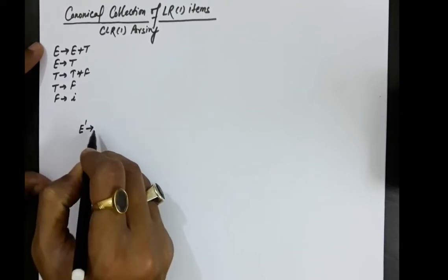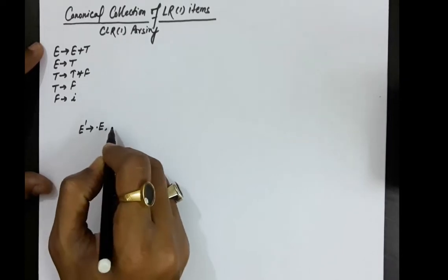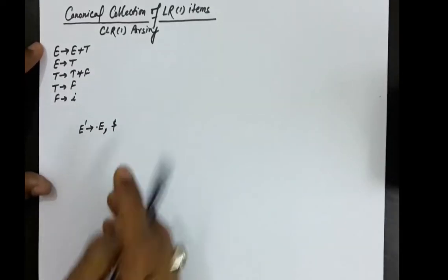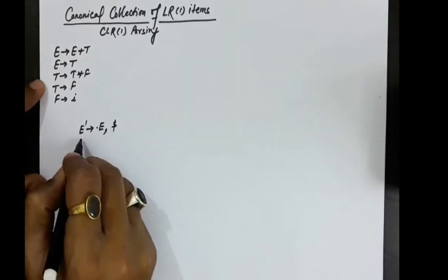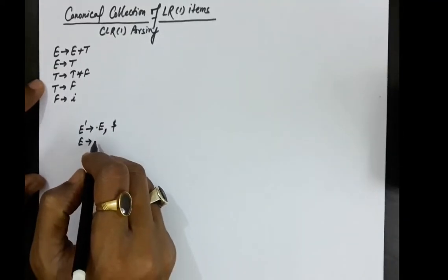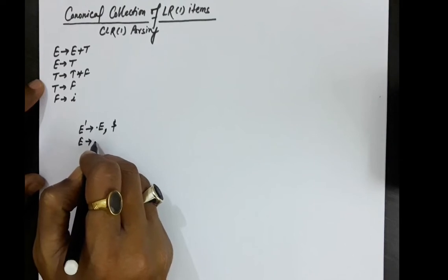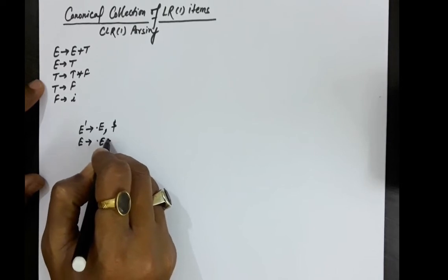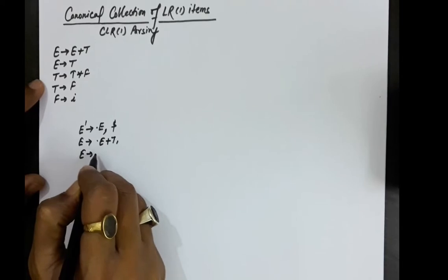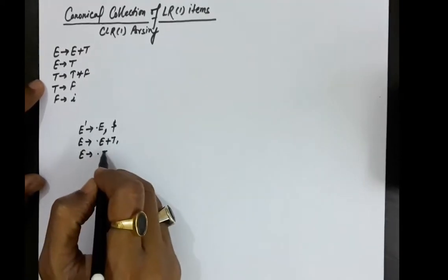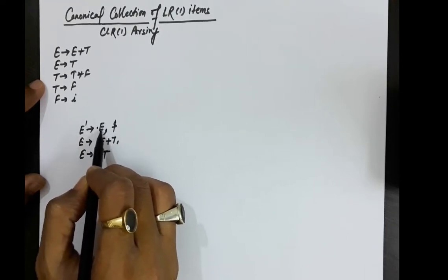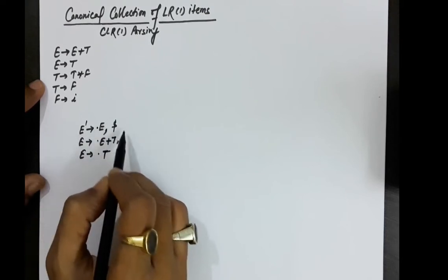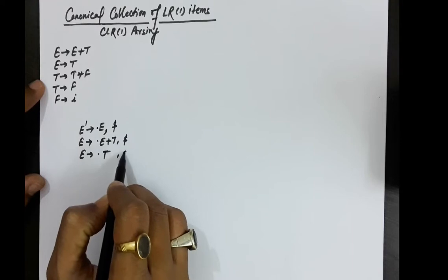In the augmented grammar, we add a production E' produces E, and dollar will be the follow of this E. Since after the dot there is a non-terminal symbol, we write all productions starting with E with a dot at the first place. There are two productions: E produces dot E plus T, and E produces dot T. The dollar will be in the lookahead symbols.